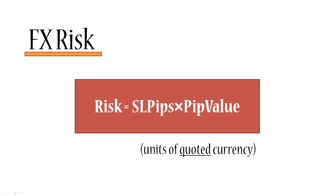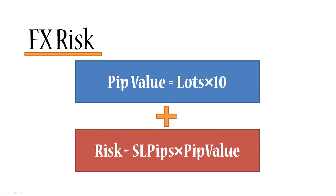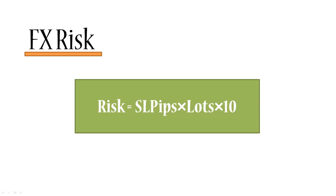Now let's put the two formulas together. We know pip value equals lots times 10, and risk equals stop-loss in pips times pip value. Substituting pip value from the first formula into the second gives us: risk = stop-loss in pips × lots × 10.